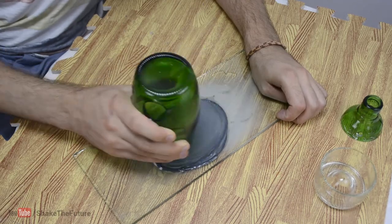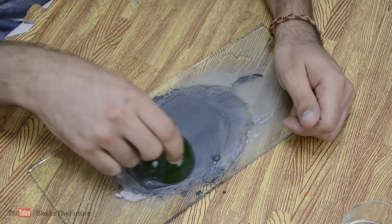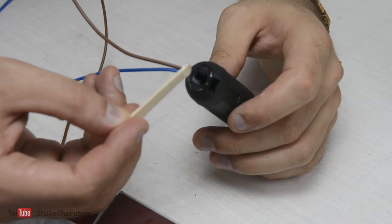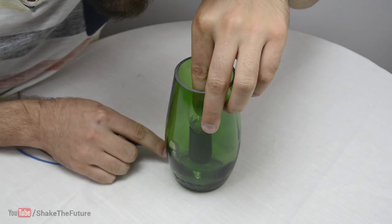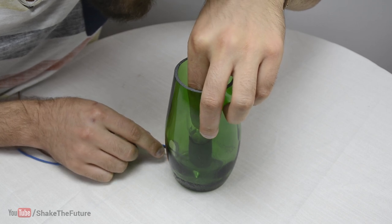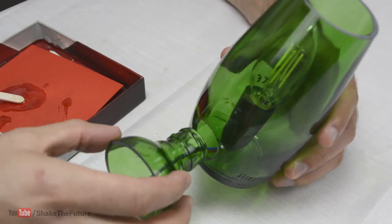Let's sand it a little bit. I glued a plastic light bulb socket inside the bottle. For gluing both pieces together, I used epoxy glue.